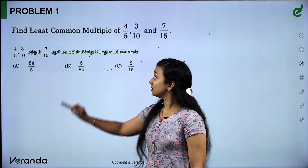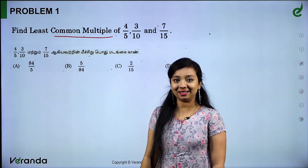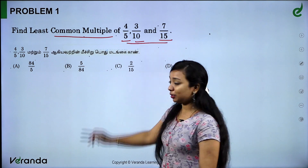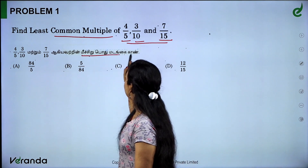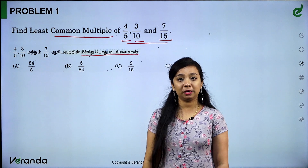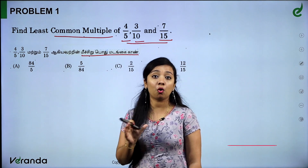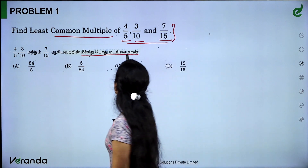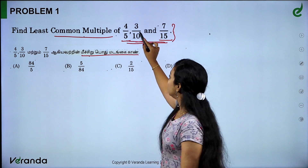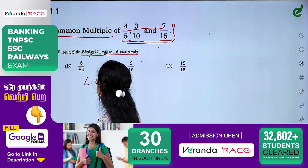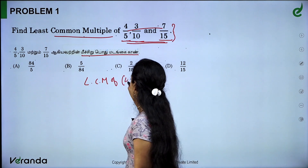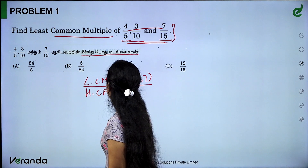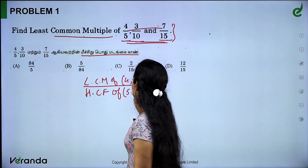Problem 1: Find the Least Common Multiple. If questions are asked in two languages — in Tamil or English — Least Common Multiple of 4/5, 3/10, and 7/15. We need to find the LCM of these 3 fractions. For fraction LCM, the formula is: LCM of numerators divided by HCF of denominators. Numerators are 4, 3, 7 and denominators are 5, 10, 15.